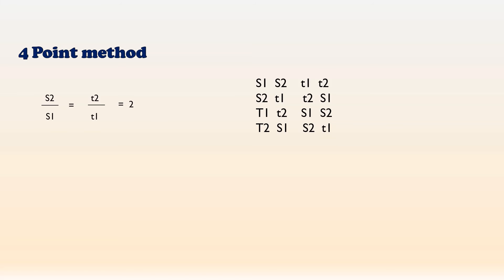And the amount of standard producing the same response as produced by the test can be determined by graphical method and it is determined mathematically using the formula N1 by T1 into antilog of S1 plus S2 minus T1 plus T2 divided by S2 plus T2 minus S1 plus T1 whole into Cs.